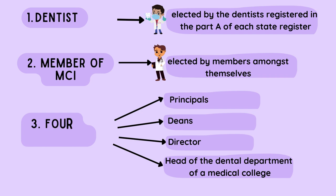The next group includes four members who could belong to different groups. They could be the principal, deans, director, or the head of the dental department of a medical college. They could also belong to universities in the state.